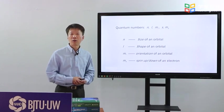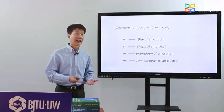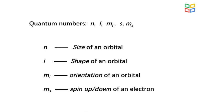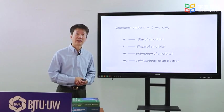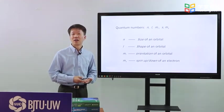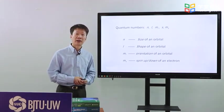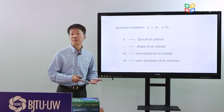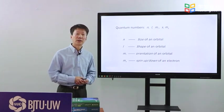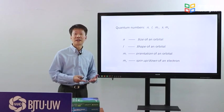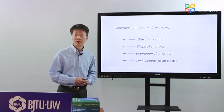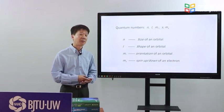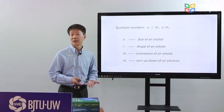Now, we finally have all the codes for an electron. A set of quantum numbers to describe the state of an electron. n for the size of an orbital. l for the shape of an orbital. ml for the orientation of an orbital. And ms for the spin up or down of an electron.